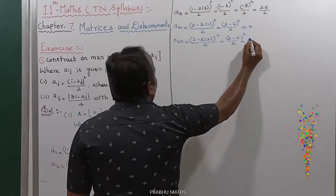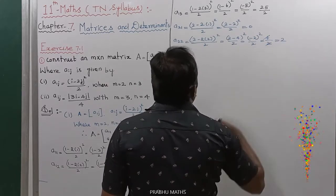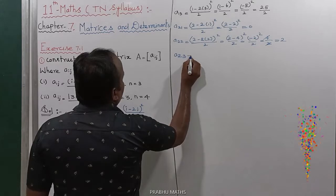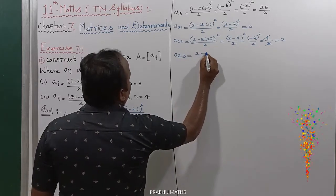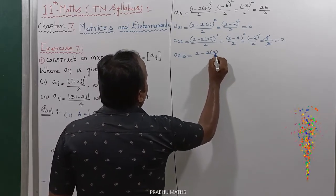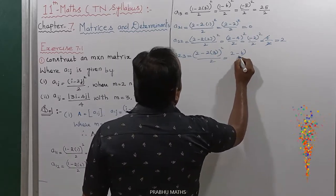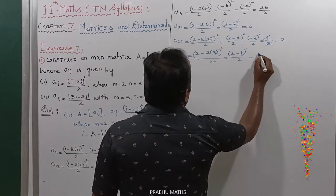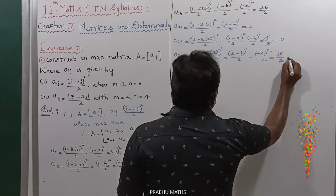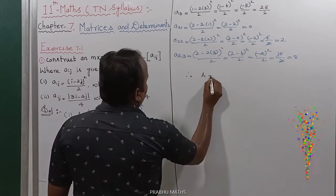Next is A₂₂: (2 minus 2 into 2) whole square divided by 2, equal to (2 minus 4) whole square divided by 2, equal to (-2) whole square divided by 2, equal to 4/2, which cancels to equal 2. For A₂₃: (2 minus 2 into 3) whole square divided by 2, equal to (2 minus 6) whole square divided by 2, equal to 16 divided by 2, equal to 8.